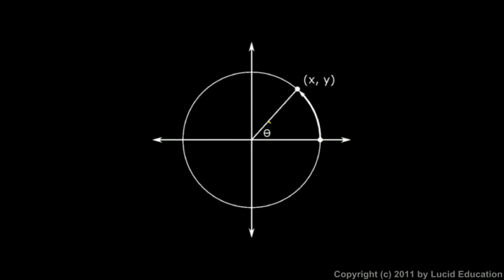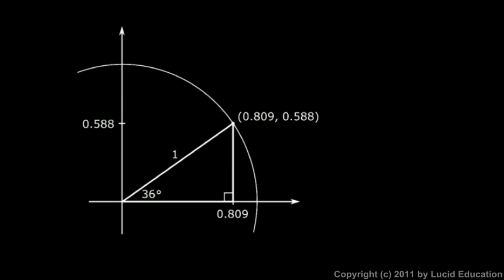Now imagine some angle theta. Remember, we always start here on the unit circle and rotate in this direction. So this angle theta corresponds to a certain movement around the unit circle, or to a certain point on the unit circle at which we stop after rotating through that angle. That point has x and y coordinates. Let's look at a specific example — suppose the angle is 36 degrees.